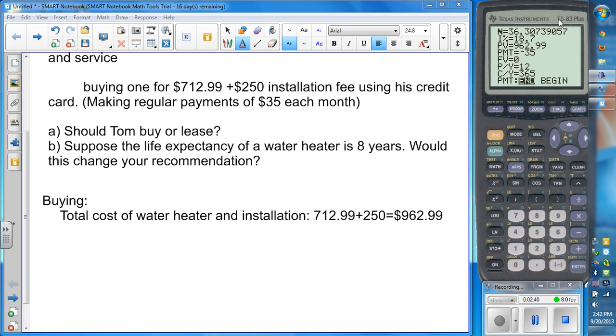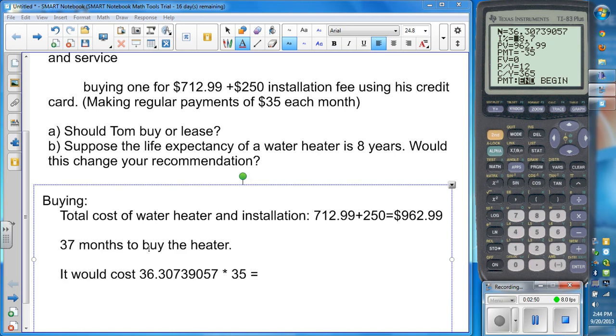Because remember, we have a little bit extra, that means that is going to carry over into the next month. So it's 37 months to buy a water heater for him. So then to figure out how much it's going to cost him in total, it's going to cost him this number of payments, 36.30739057 times $35 a month is what he can pay. So once we multiply those together, we get the total cost of $1,270.76.